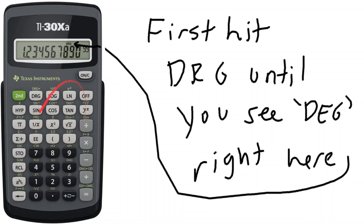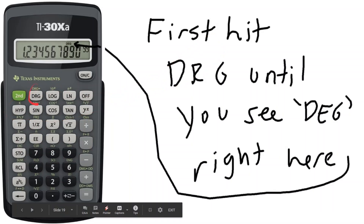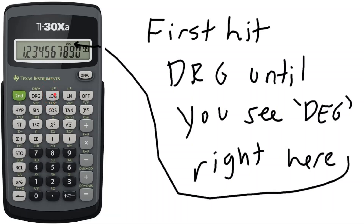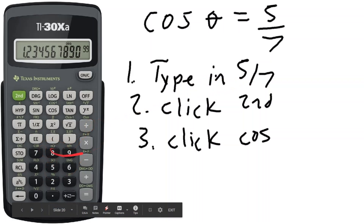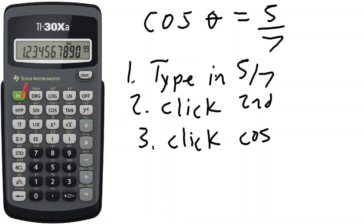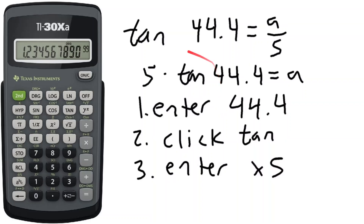Now let's look at physical calculators. First, hit the degree button until you see 'DEG' displayed at the top of the calculator. To solve cosine theta equals 5 over 7, type in 5 divided by 7, then click the second button — it's the highlighted green button in the top left corner — and then click the cosine button. This inputs the inverse cosine of 5/7.